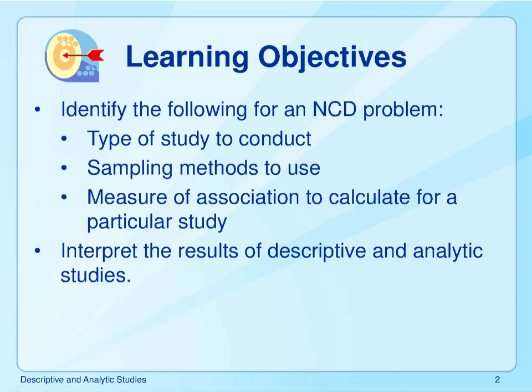At the conclusion of this lecture you should be able to do the following. First, when presented with a specific NCD problem such as determining the risk factors for obesity in a population of school-age children, you should be able to identify what study type you would use. Second, what method you would use to sample the population. Third, what measures of association or statistical tests you will use to show the association between risk factors and obesity. And fourth, you need to be able to interpret the results of your study.